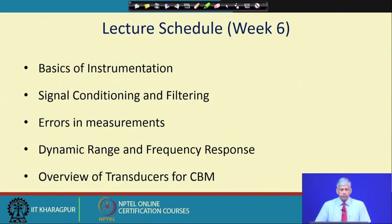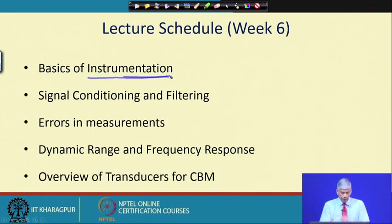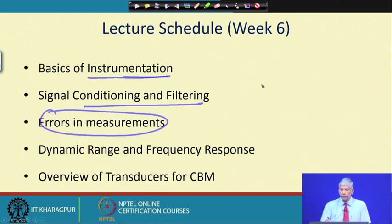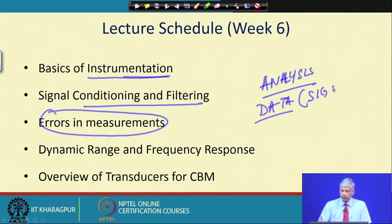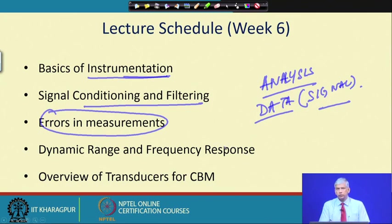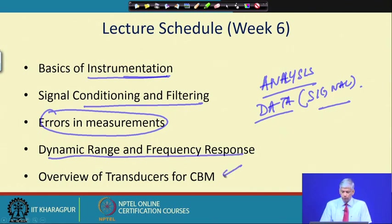Towards the middle of the course we will cover instrumentation — an overview of instrumentation, how signal conditioning and filtering is done. Errors in measurement are very important because all analysis regarding a machine's health depends on the data. If the signal is wrongly acquired, interpretation will be wrong. We will explain how obvious errors can be reduced, and cover the dynamic range and frequency response of transducers, along with a list of transducers for different CBM techniques used in machinery health monitoring.